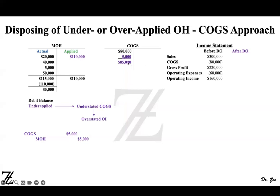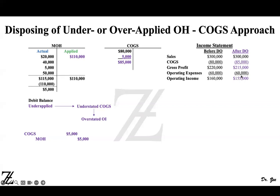You had $80,000 previously, and now you have $85,000 after disposing off. The cost of goods sold balance increased because you underapplied manufacturing overhead. Looking at the income statement, sales remain $300,000, but cost of goods sold increased by $5,000, making gross profit $215,000. That $5,000 cost increase causes gross profit to decrease by the same amount. Assuming operating expenses stay the same at $60,000, your operating income decreases to $155,000. Remember, operating income was overstated before, so fixing cost of goods sold corrects the operating income.